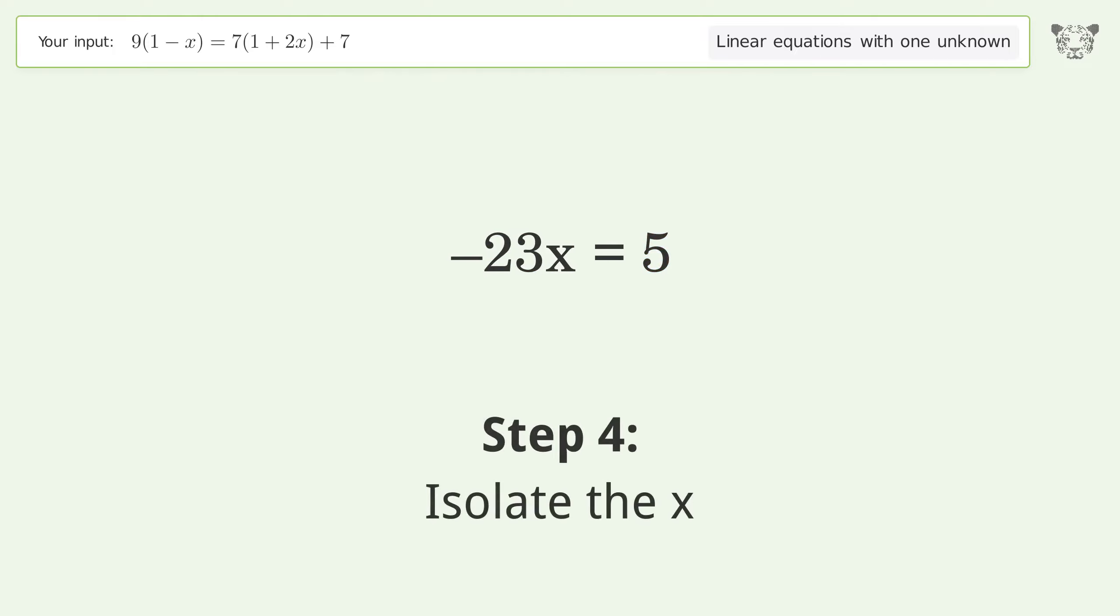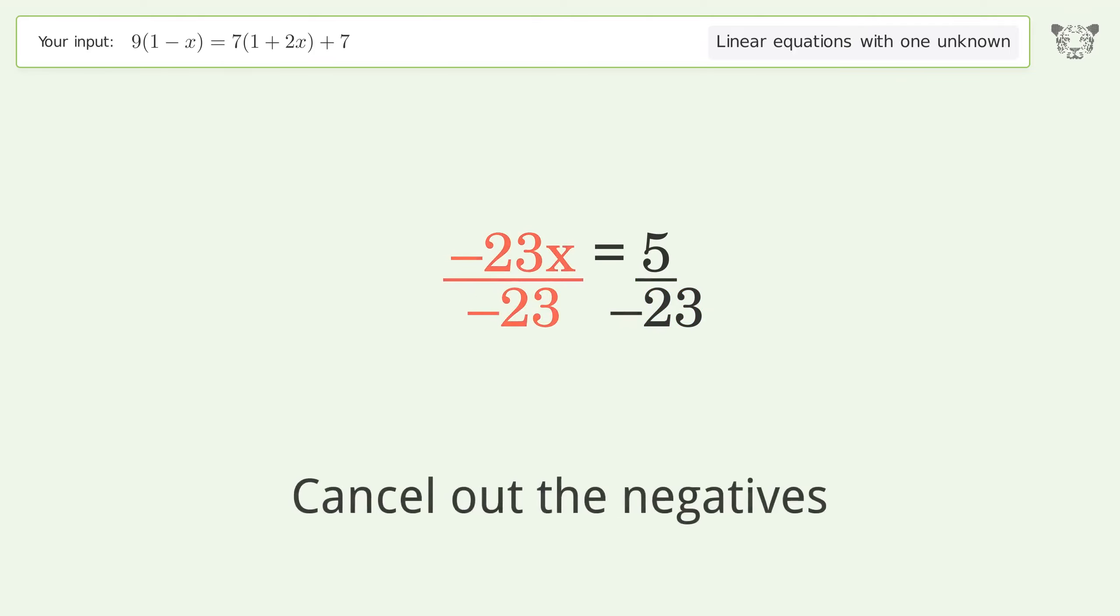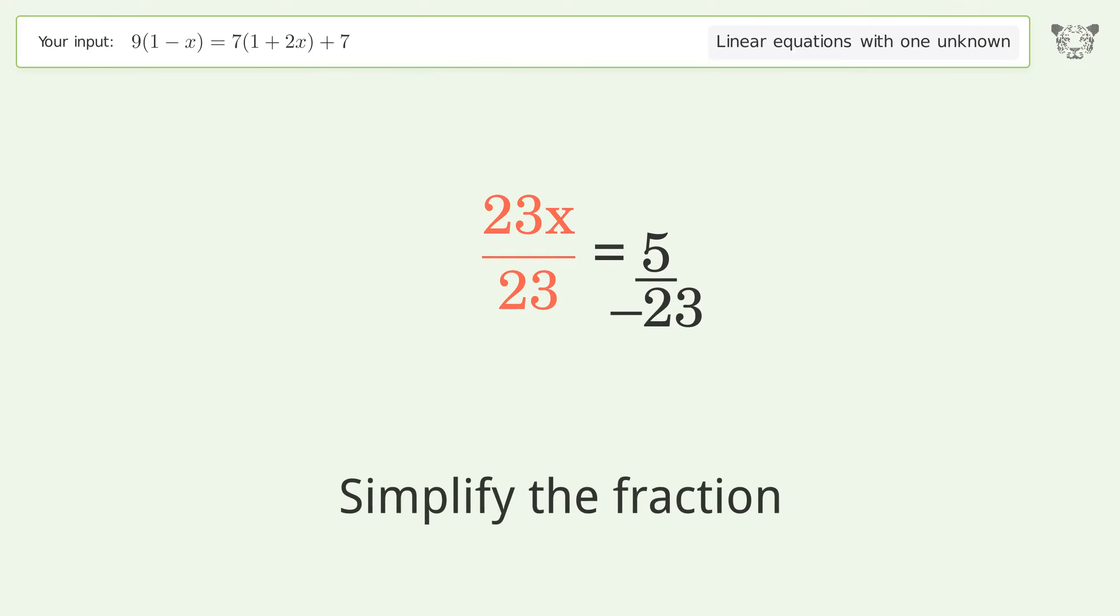Isolate the x. Divide both sides by negative 23. Cancel out the negatives, simplify the fraction.